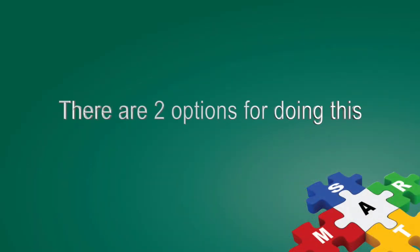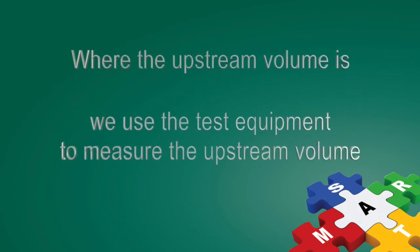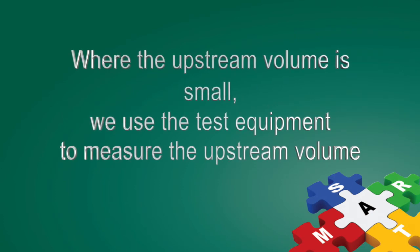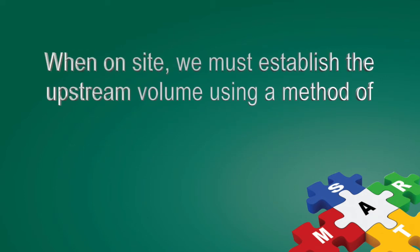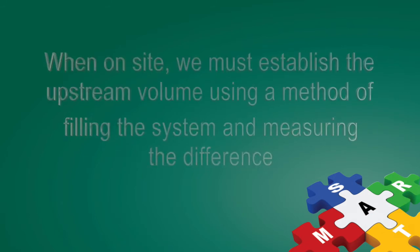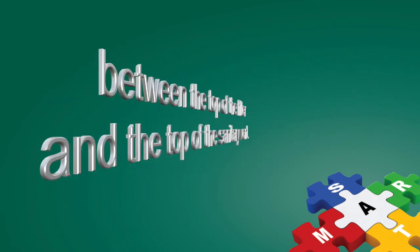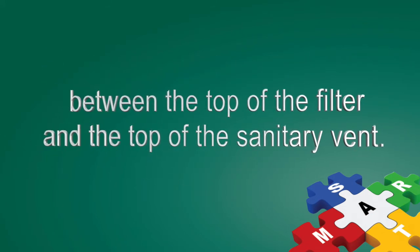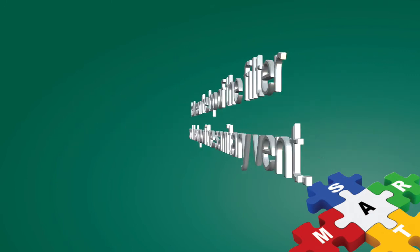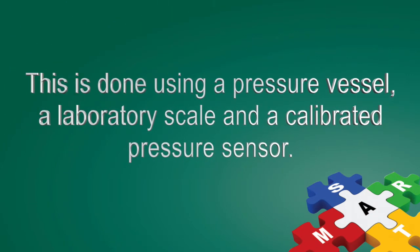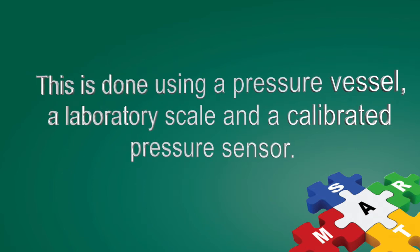There are two options for doing this. Where the upstream volume is small, we use the test equipment to measure the upstream volume. But when on site, we must establish the upstream volume using a method of filling the system and measuring the difference between the top of the filter and the top of the sanitary vent. This is done using a pressure vessel, laboratory scale, and a calibrated pressure sensor.